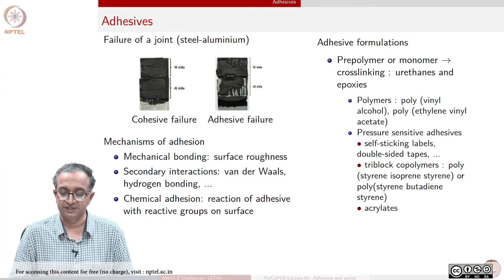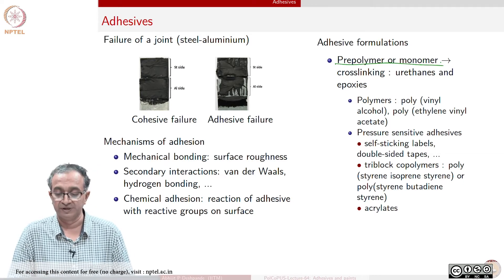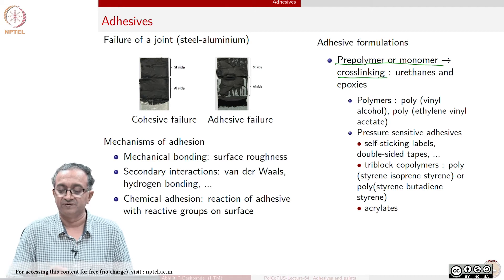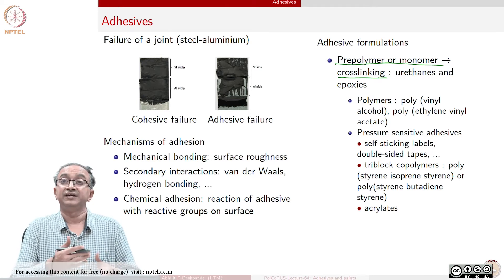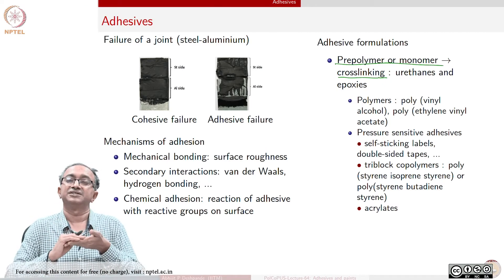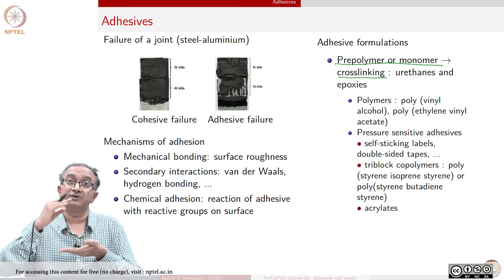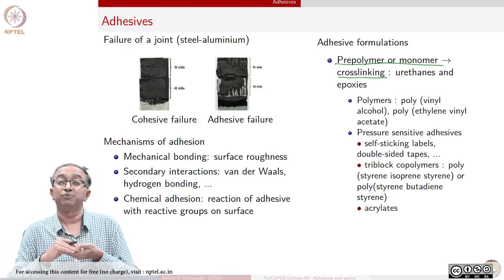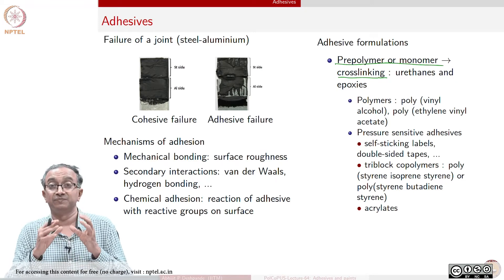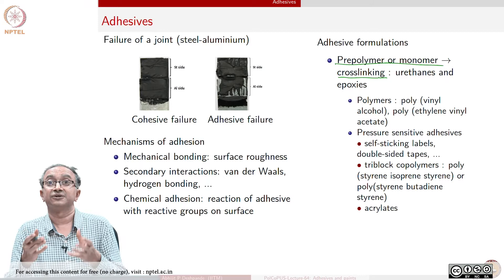Generally adhesive formulations have a prepolymer or a monomer and then crosslinking takes place, because when we need to apply the adhesive, we need sufficient flow behavior. But in the final part, the adhesive needs to be strong — it needs good strength itself and at the same time it also needs to form very good bonds with both surfaces it is trying to bond. With a liquid state, a prepolymer or monomer state, it is easier to achieve this.